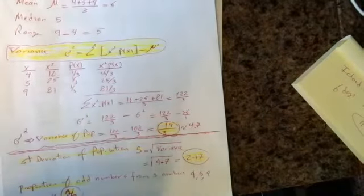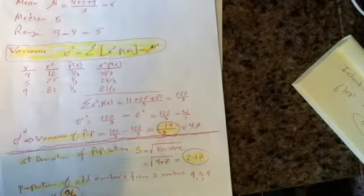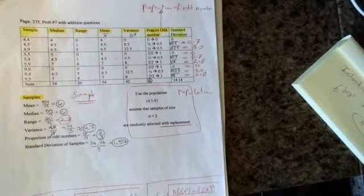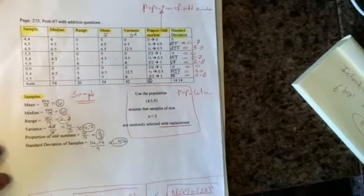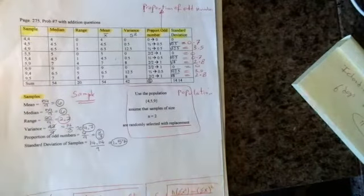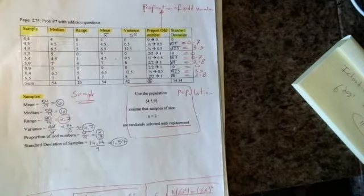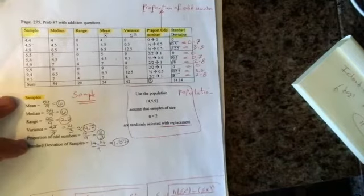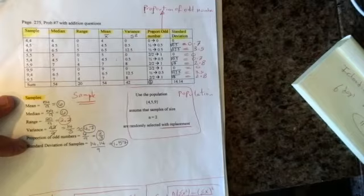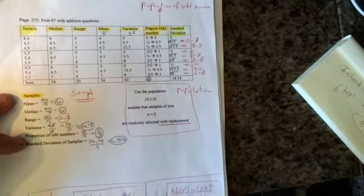Now we look at these tables here and we want to do the samples. If you have three numbers — 4, 5, and 9 — and you want to take a sample of 2 (n = 2), how many choices do you have? What is the variation when you take 2 out of 3 numbers?